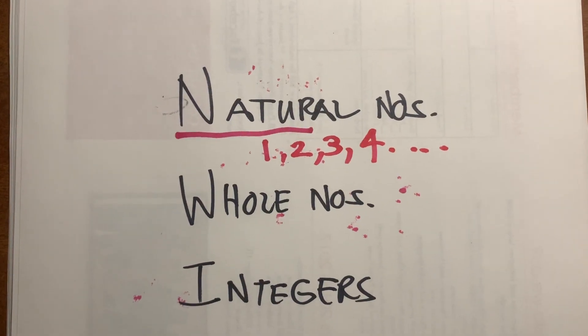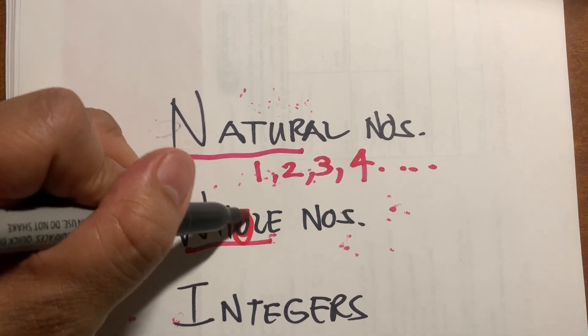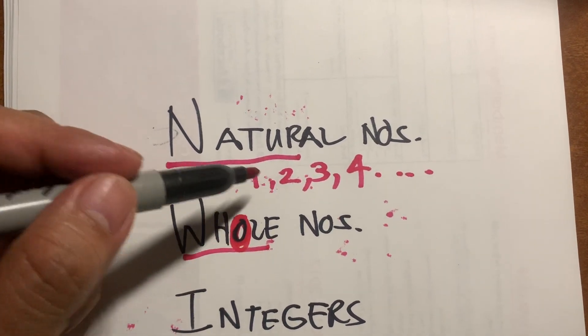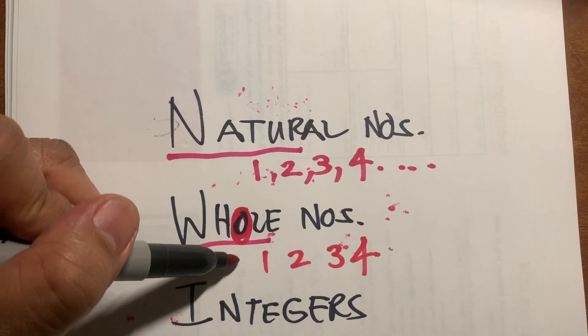There are whole numbers. Now, for the next one, a whole number, think of that O as a 0. So it's basically the same natural numbers but including a 0.